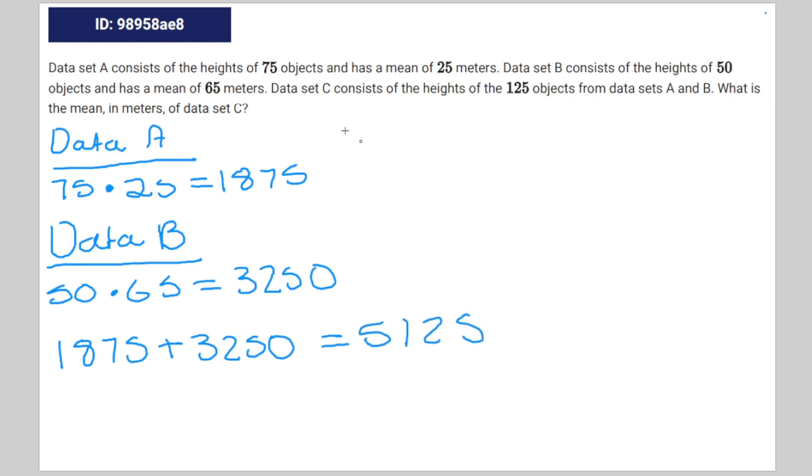To find the mean of dataset C, which is what they're asking for, I'm just going to take the total height and divide it by the amount of objects that are in dataset C. So that's going to be 5125 divided by 125. And that is equal to 41. Therefore, 41 is the correct answer.